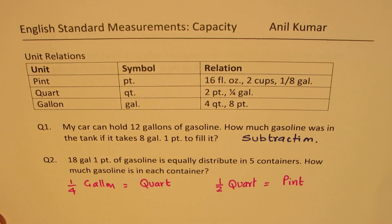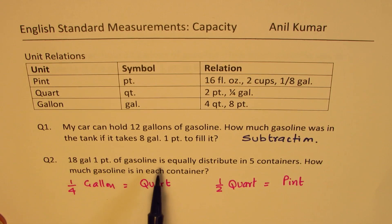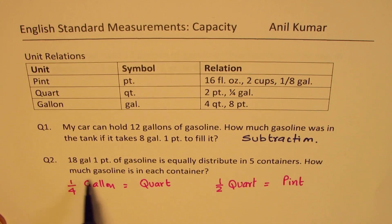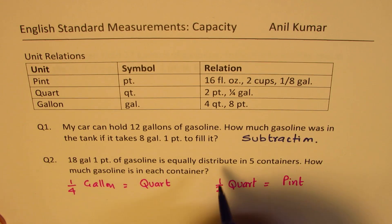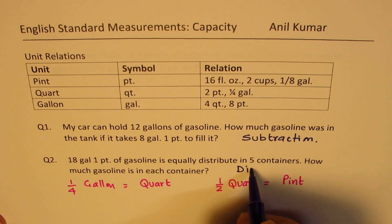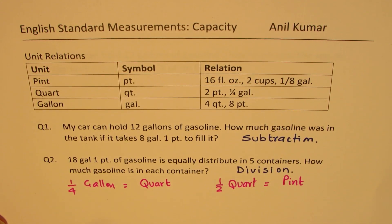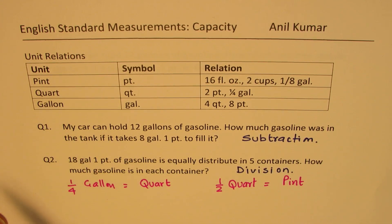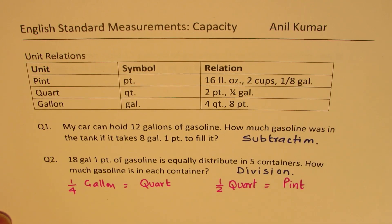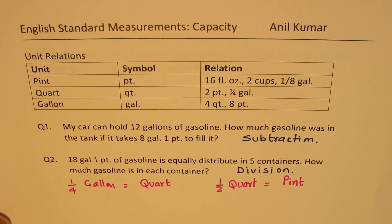So the difference we have to find. In question number two: eight gallons one pint of gasoline is equally distributed in five containers — how much gasoline is in each container? So that means division. You can always pause the video, answer these questions, and then look into my suggestions.